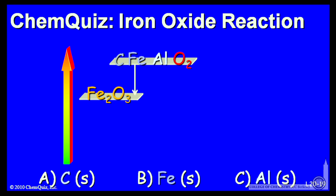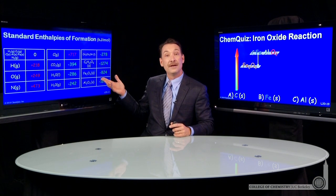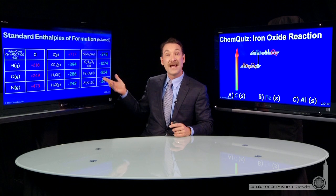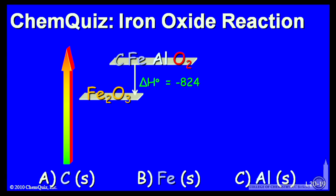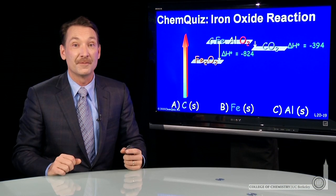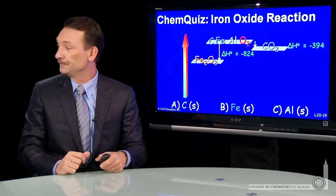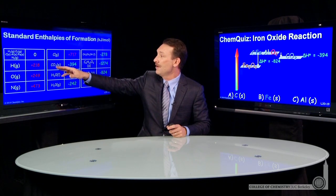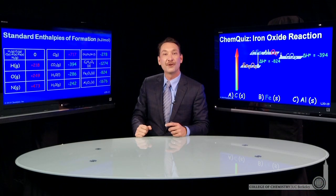Iron oxide, if I look at my table, forms from the elements and releases 824 kilojoules. So this enthalpy change is -824 kilojoules. What about the formation of carbon dioxide? I can form carbon dioxide from the elements in their standard states - a release of 394 kilojoules.